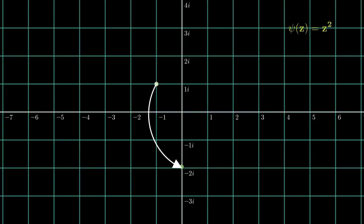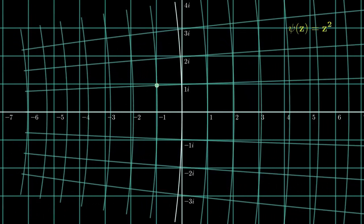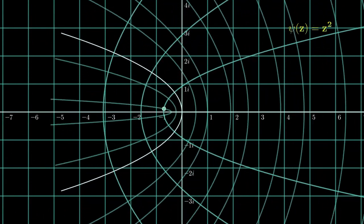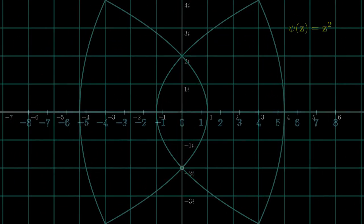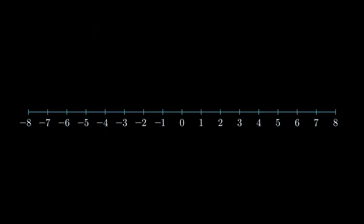You can extend this definition of a function into the complex plane, but for now, just for simplicity's sake, we'll stick to all numbers on our real number line. An example of a function is f(x) = x squared. If you give it some points on the real number line, for example x equals 2, then the function maps that point to another point on the number line using that rule. 2 squared gives you 4, and so the point at x equals 2 gets mapped to y equals 4.